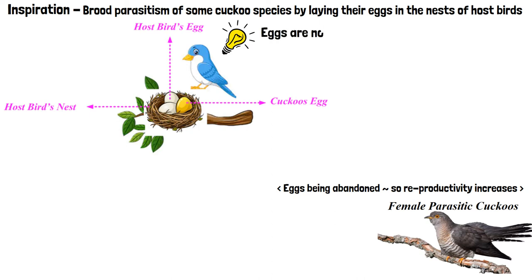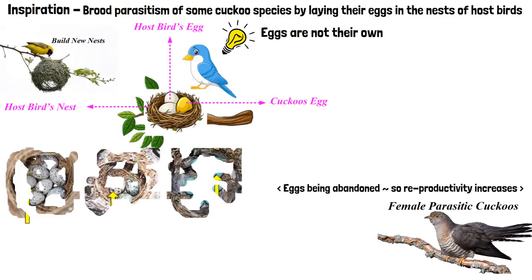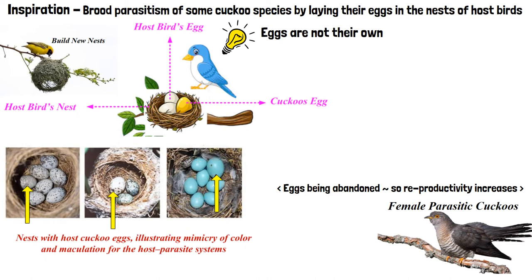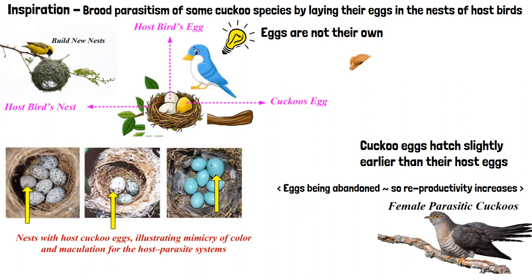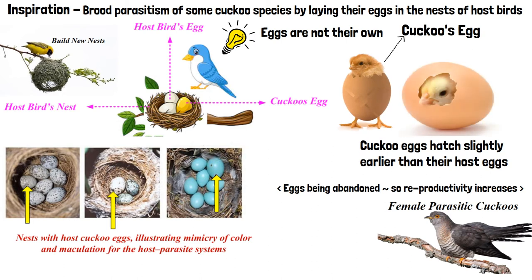If host birds discover the eggs are not their own, they will either throw them away or simply abandon their nests and build new ones. Parasitic cuckoos often choose a nest where the host bird just laid its own eggs. In general, the cuckoo eggs hatch slightly earlier than their host eggs. Once the first cuckoo chick is hatched, its first instinct is to evict the host eggs by blindly propelling them out of the nest.